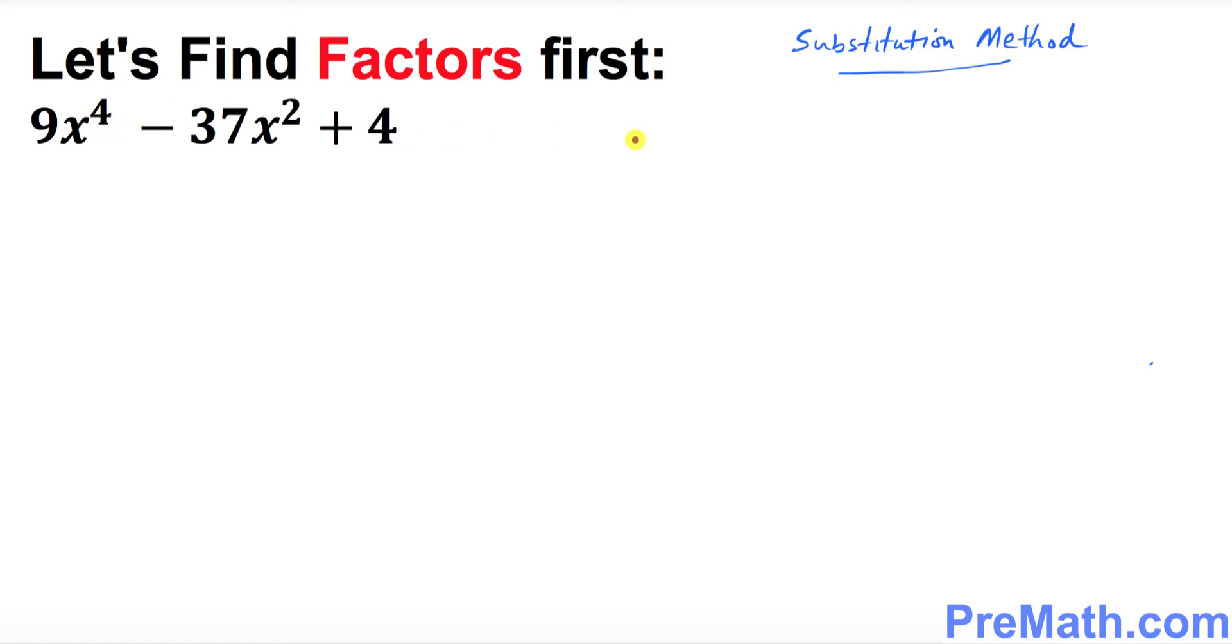So in order to do that, I want to say I'm going to let u equal to x square, then u square I can say it's going to become x square and then power 2. So x power 2 and power 2 become x power 4, u square. So we got these two substitutions right up here.